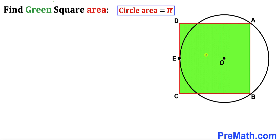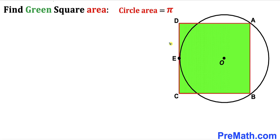In this video we have a green square ABCD and a circle with center O, arranged so that points A, B, and E lie on the circle. The area of the circle is given as π square units, and side CD is tangent to the circle at point E. Our task is to find the area of the green square ABCD.